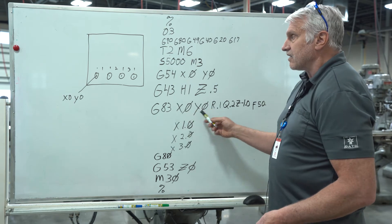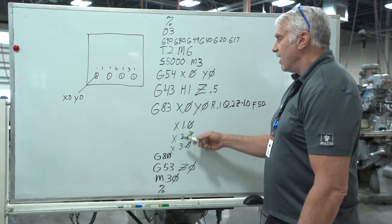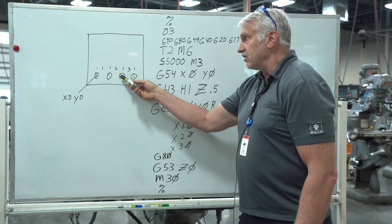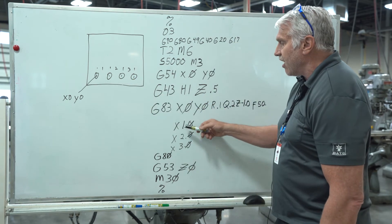So the XY is our first hole location. Then we go to X of one, which is one inch over. Then two inches over. Then three inches over. There they are. One, two, and three.